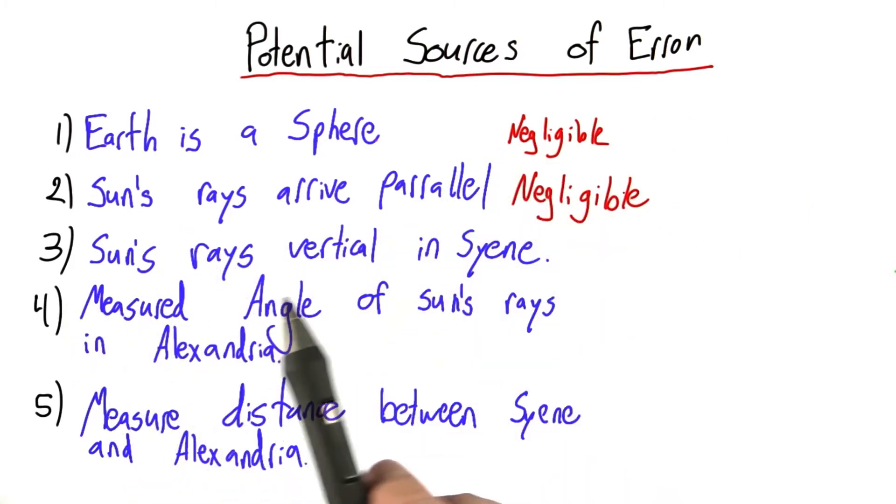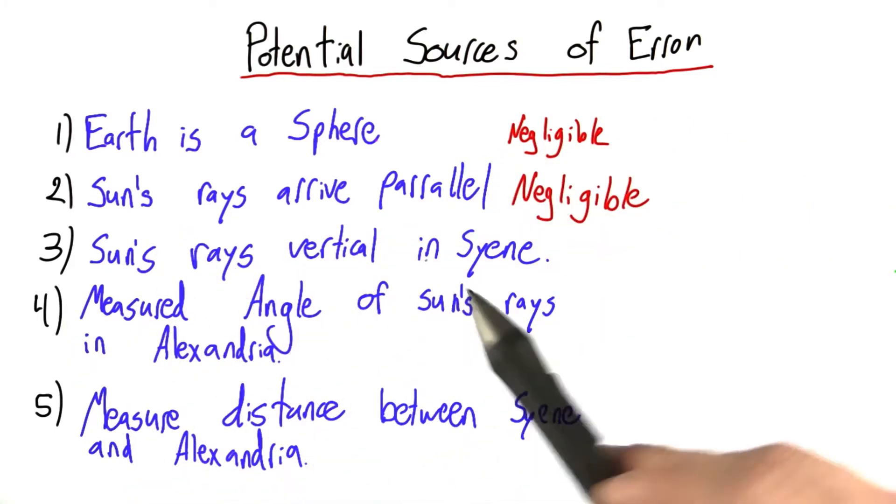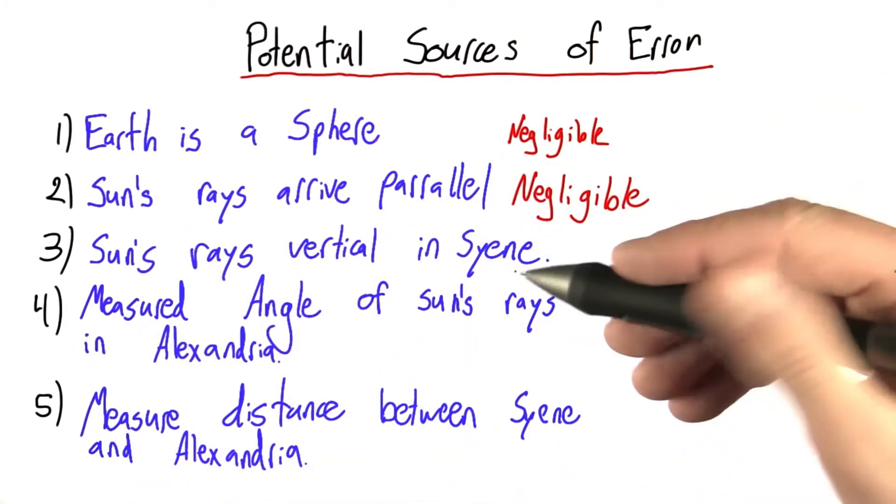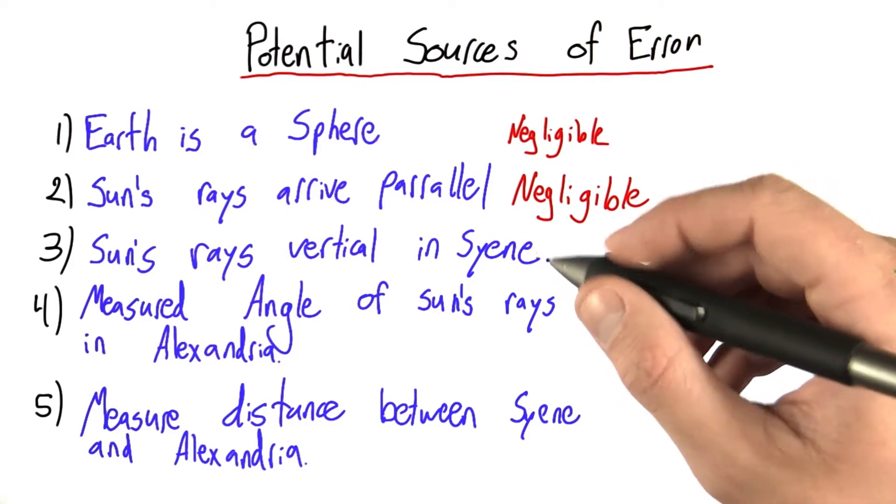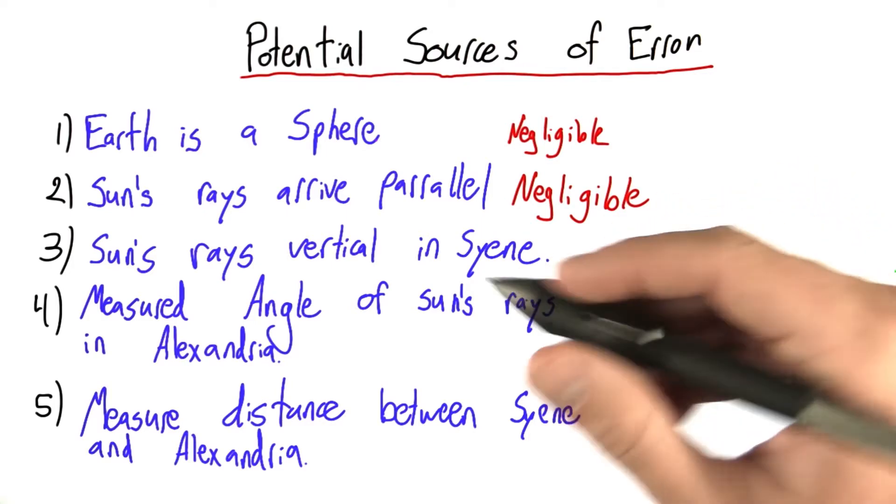Let's talk about point three. Do the sun's rays actually arrive vertically in Syene? To answer this question, let's think back to how Eratosthenes came to this conclusion.